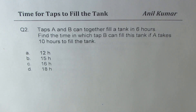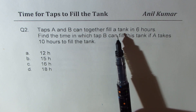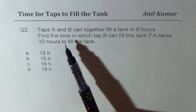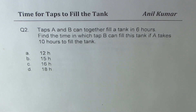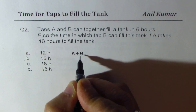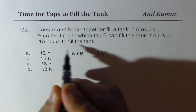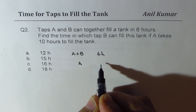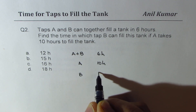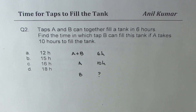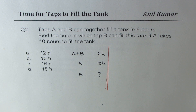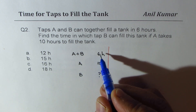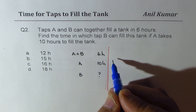Question two: Taps A and B can together fill a tank in six hours. Find the time in which Tap B alone can fill the tank if Tap A takes 10 hours alone. We are given that A and B together fill in 6 hours and A alone fills in 10 hours. We need to find the time for B alone.